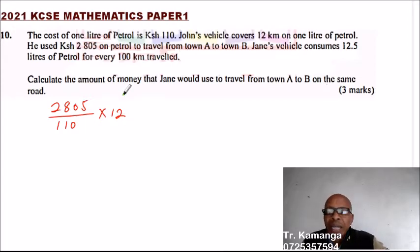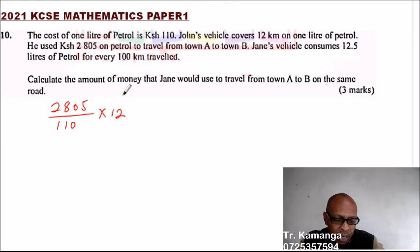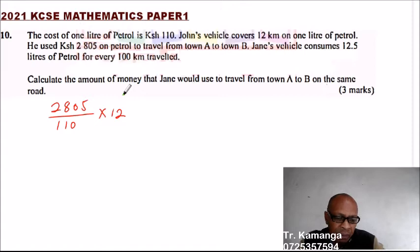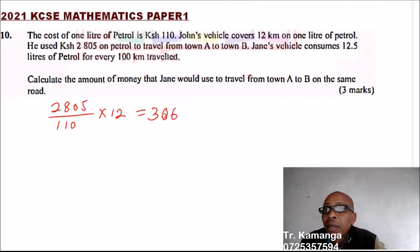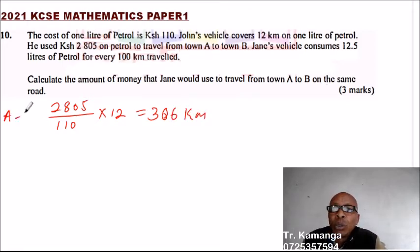So using your calculator, you say 2,805 divided by 110. That will give you 25.5. You multiply by 12, and that should give you 306 kilometers. That is from A to B.